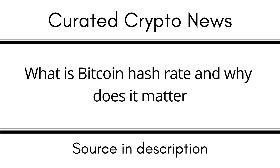How is Bitcoin's hash rate measured? Exahashes per second (EH/s), equivalent to one quintillion hashes, are used to express the hash rate of BTC. By comparing the average time between mined blocks with the network difficulty at a particular time, the overall network hash rate may be roughly calculated. Mining difficulty refers to how tough it is for miners to generate a hash lower than the desired hash, accomplished by lowering the hashed block header's numerical value. On average, a new Bitcoin block is found every 10 minutes; if BTC is discovered less frequently than the average time, the difficulty decreases, or vice versa.